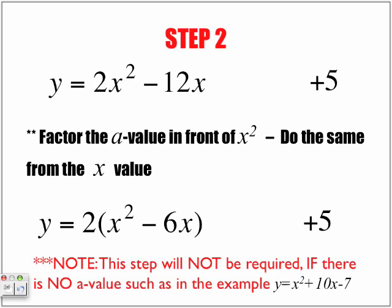This step will not be required if there is no a value, such as in the example y equals x squared plus 10x minus 7. Notice here, the a value is a 1, so we don't need to factor out if we had something like this. So if you come across an equation that's in standard form that has no value, or the value of the a is actually 1, you will skip this step. You will skip this step and just continue with step 3. So step 2 will be ignored if there is no a value.